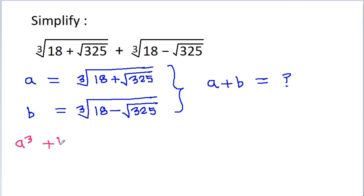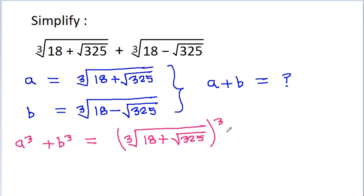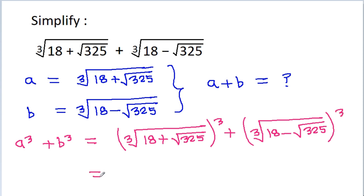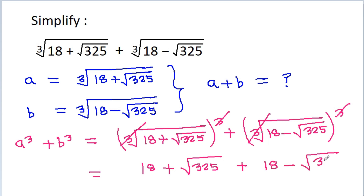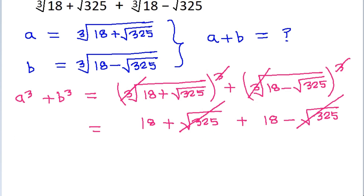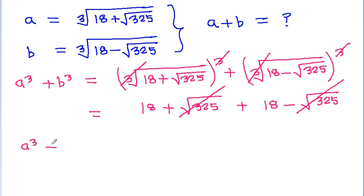A cubed plus B cubed will be equal to: A is ∛(18+√325) cubed plus B is ∛(18−√325) cubed, and the cube and cube root will get cancelled. So it is 18 plus √325 plus 18 minus √325, and √325 will get cancelled. So A cubed plus B cubed will be equal to 18 plus 18, which is 36.